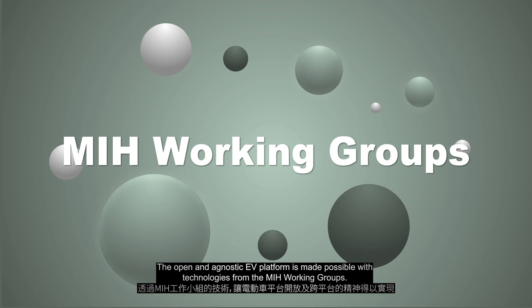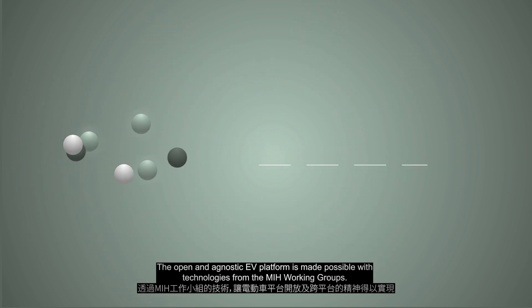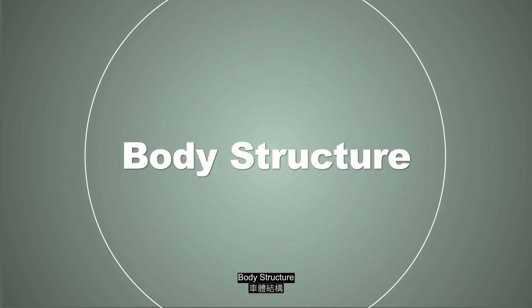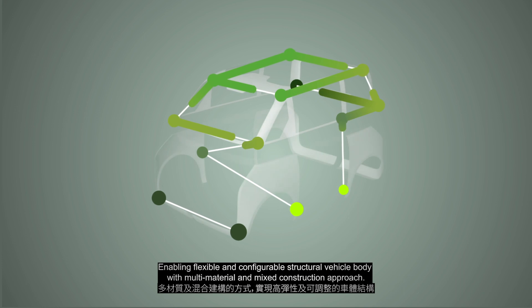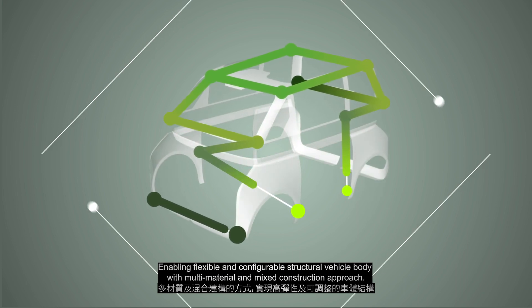The open and agnostic EV platform is made possible with technologies from the MIH working groups. Body structure, enabling flexible and configurable structural vehicle body with multi-material and mixed construction approach.